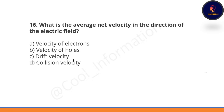What is the average net velocity in the direction of the electric field? Option A: velocity of electrons. Option B: velocity of holes. Option C: drift velocity. Option D: collision velocity. Correct option is C — drift velocity is the average net velocity in the direction of the electric field.